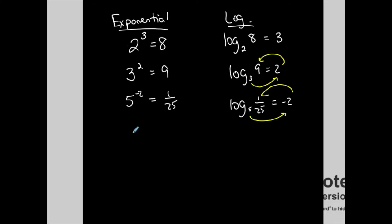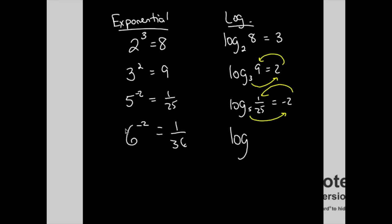Let me do another one. 6 to the negative 2 is equal to 1/36, and I want to convert this exponential form into logarithmic form. The log form: the base of the log matches the base of the exponential, which is 6. The right-hand side after the equal is always equal to the exponent, which is negative 2. And 1/36 goes here. So going around the world, 6 to the negative 2 equals 1/36 matches the exponential form of this logarithmic function.